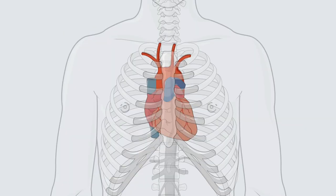Looking at the heart within the thoracic cavity, note the intercostal spaces as shown here. When the heart beats, the apex is palpable along the mid-clavicular line at the fifth intercostal space.